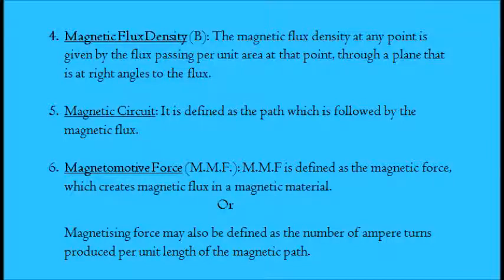4. Magnetic flux density. The magnetic flux density at any point is given by the flux passing per unit area at that point, through a plane that is at right angles to the flux.